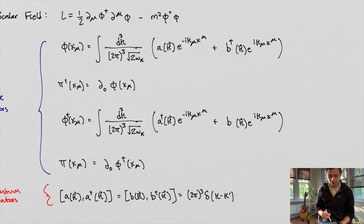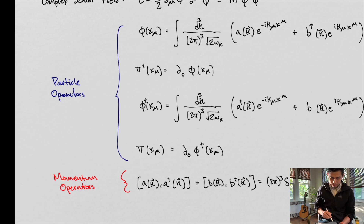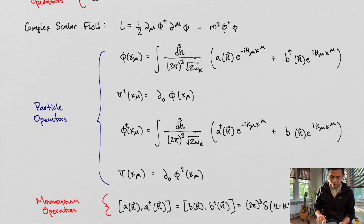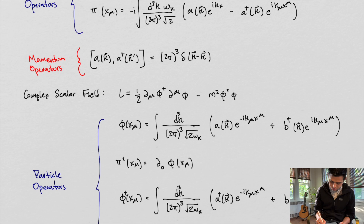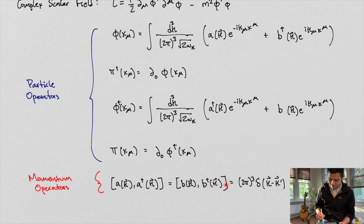The commutation relationships for the complex scalar field look like this. As opposed to the scalar field, we have this new addition of two operators here, and this introduced the idea of antiparticles.